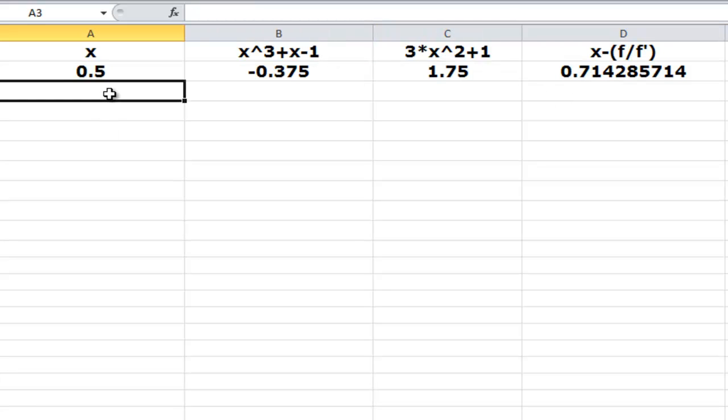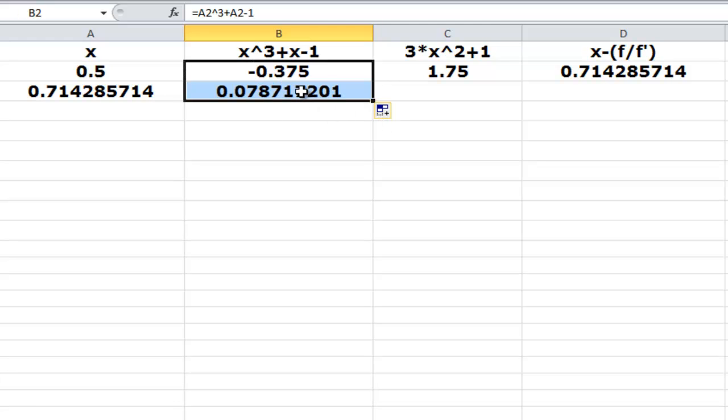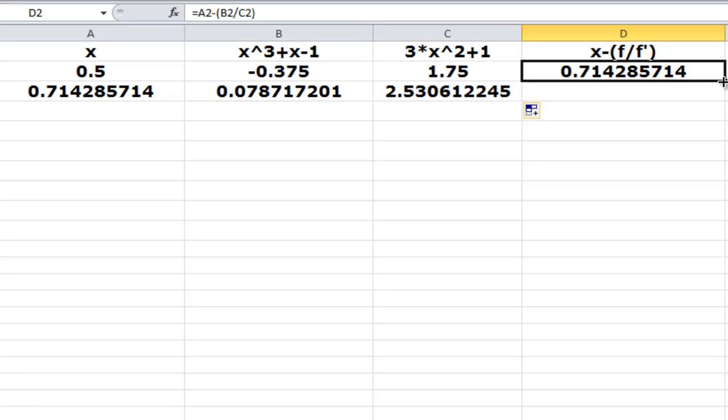Now what will happen? The value now would be, this second value would be equal to this value. So let's type that in. And as you do in Excel, you just copy and paste it down here. So you get the corresponding values here. And here is our next iteration.